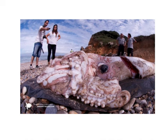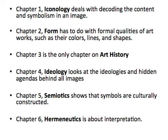This course will give us the tools to understand how to analyze the images around us. The first part of the textbook provides six different strategies for analyzing visual texts, each given its own chapter. Chapter one on iconology deals with decoding the content and symbolism in an image. Chapter two on form shows how early 20th century art theorists argued that the formal qualities of art — color, lines, shape — were the most important.